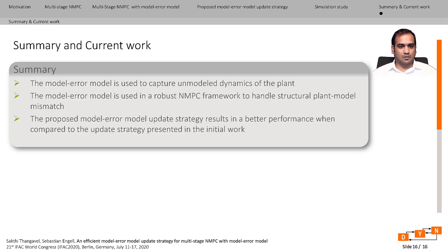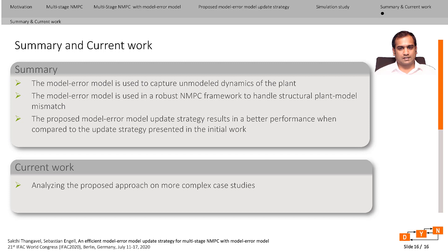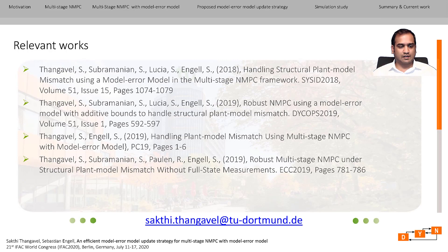Finally, to summarize: we use the model error model to capture the unmodeled dynamics present in the nominal model of the plant. The MEM is used in a robust multi-stage NMPC framework to be robust against structural plant model mismatch. In this paper, we proposed a novel model error model update strategy to update the MEM whenever the observed measurements invalidate it, resulting in better performance compared to the update strategy from the initial work. Our future work will focus on testing the multi-stage NMPC with model error model on a more complex case study.